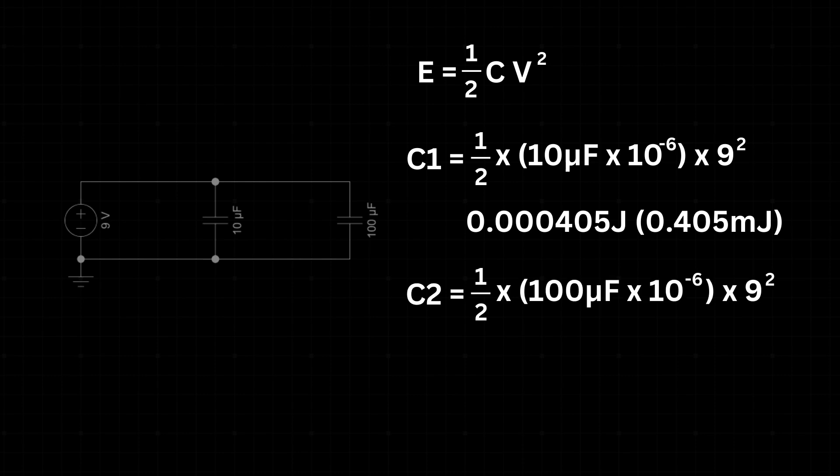For C2, it is 1 half times 100 microfarad times 10 to the minus 6 times 9 to the power of 2. The energy stored in C2 is 0.00405 joules or 4.05 millijoules.